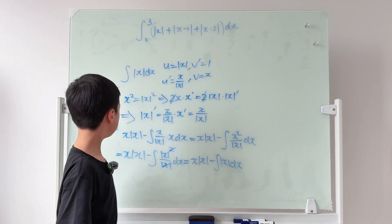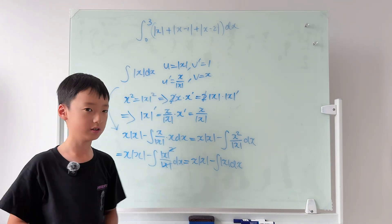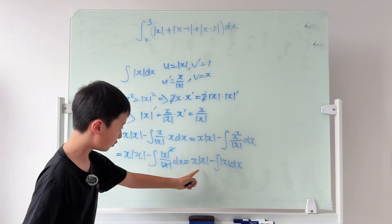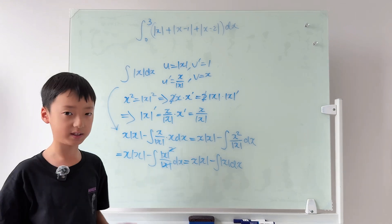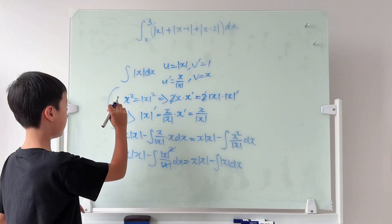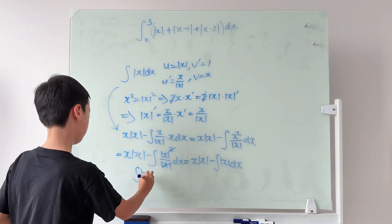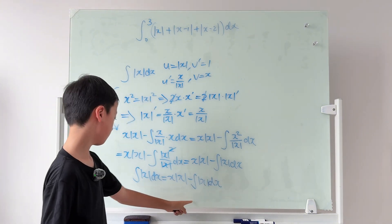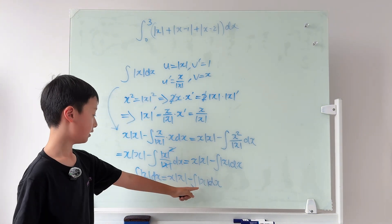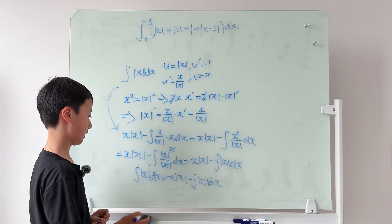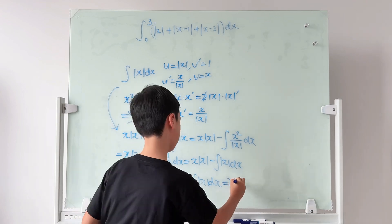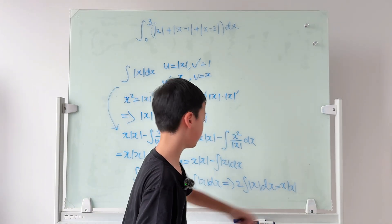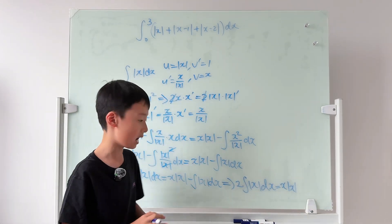We have the original integral appearing on both sides — this is a recurrence formula. Moving the integral to the left side gives us 2 times the integral of |x| dx equals x·|x|. Dividing both sides by 2 gives the result.